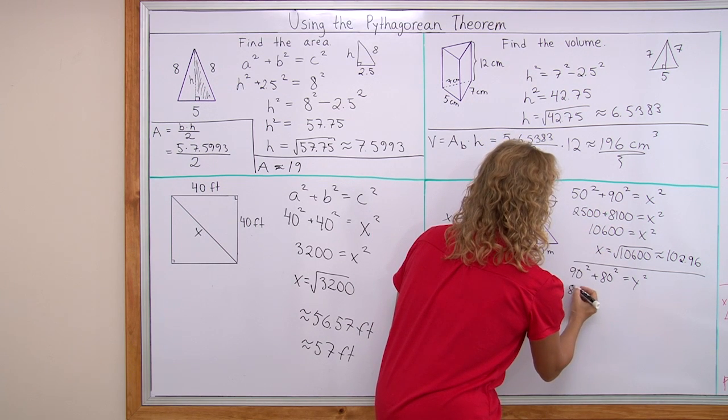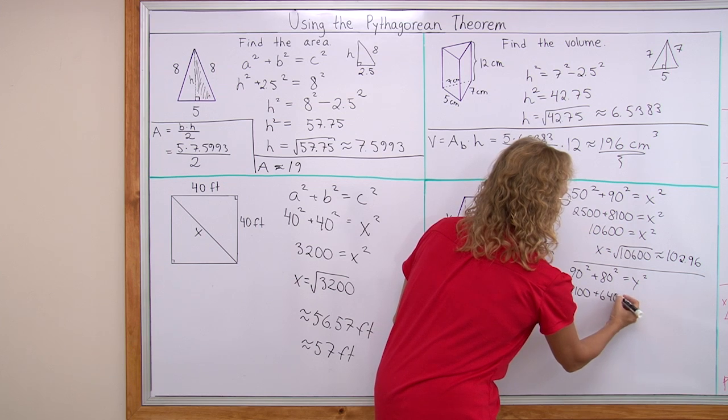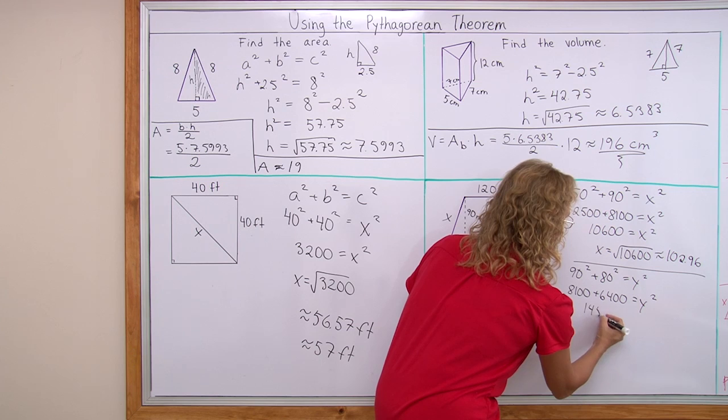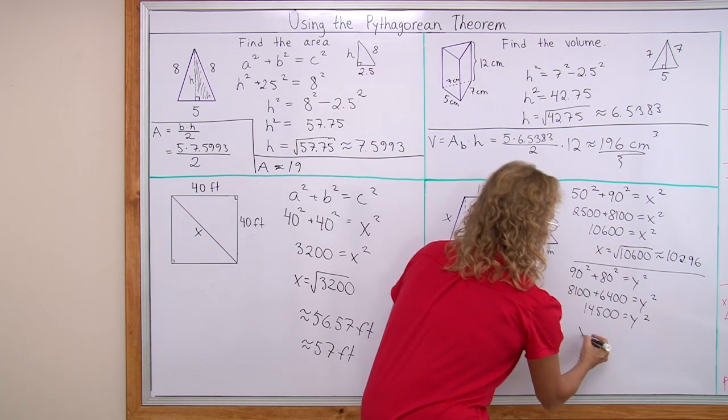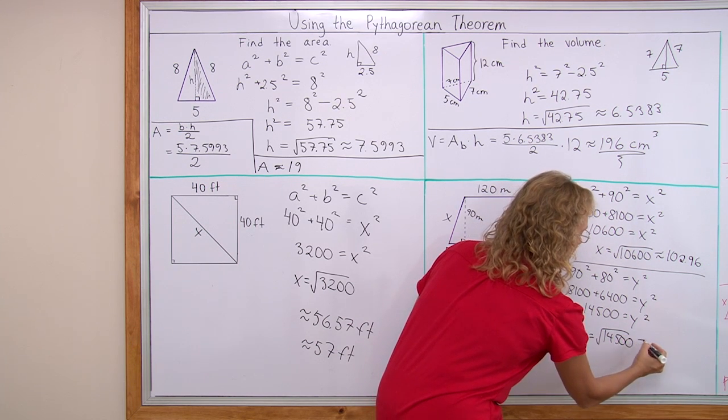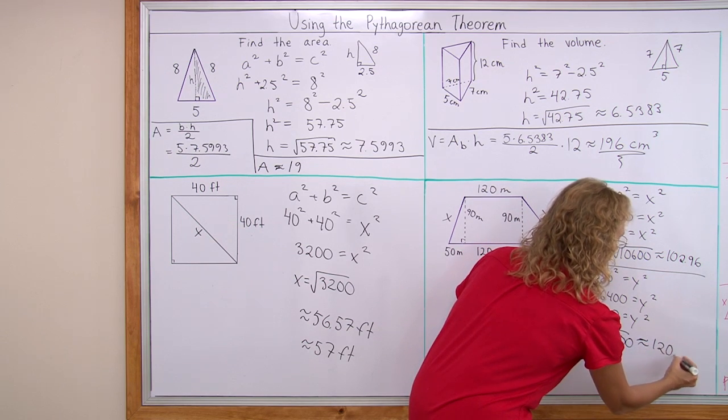And so here you would have 8100 and 6400 equals your y squared, and here we get 14500 equals y squared, and then y is the square root of that. And that is approximately 120.42.